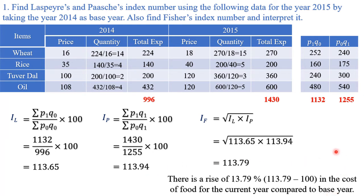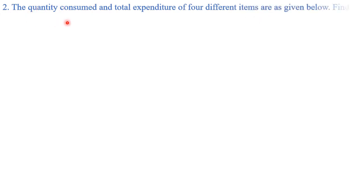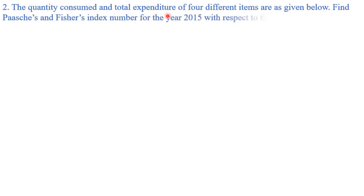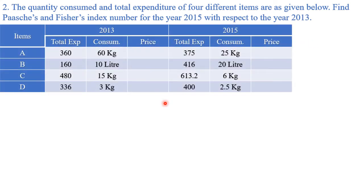That is the answer for the first question. Moving on to question 2: the quantity consumed and total expenditure of four different items are given. This time you don't have price and total expenditure — you have quantity and total expenditure — so you need to divide total expenditure by quantity to calculate price.